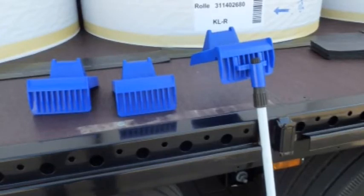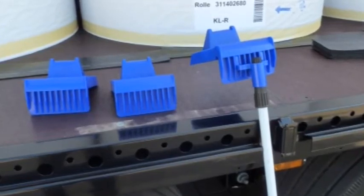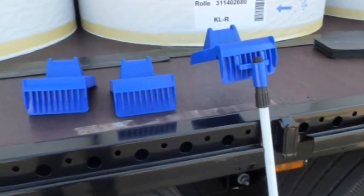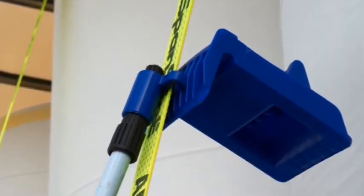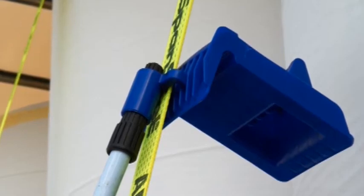Thanks to a special telescopic bar, the edge protectors can also be positioned onto the paper rolls quickly, easily, safely, and efficiently, without the need for additional tools such as ladders or the need to mount the loading area.